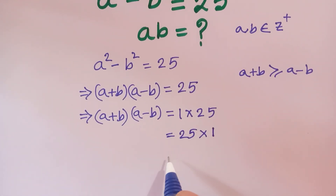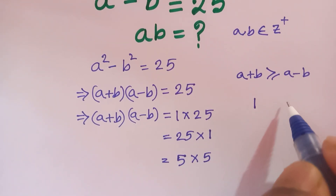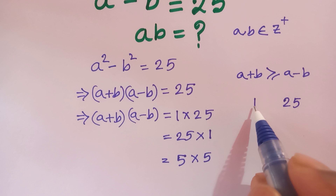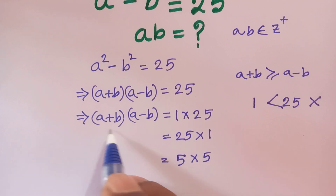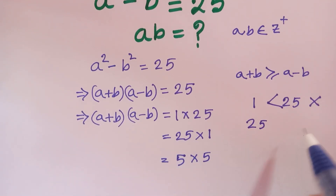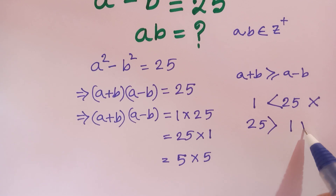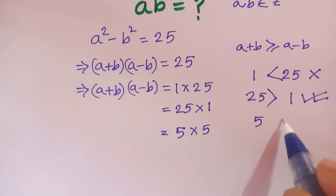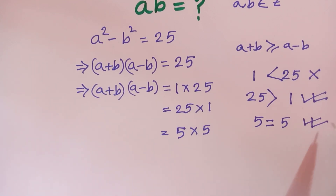The factor pairs are: 1 times 25, 25 times 1, and 5 times 5. In the case where a plus b equals 1 and a minus b equals 25, since a plus b must be greater than a minus b but 1 is less than 25, this is impossible. In the case where a plus b equals 25 and a minus b equals 5, both are valid, so this case is possible.